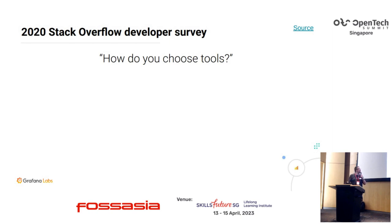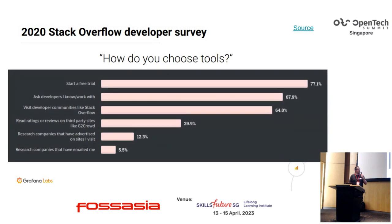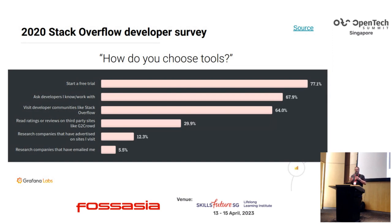There's a really nice Stack Overflow survey — they did one again last year, but the results are basically the same — asking how developers choose software. If you look at the first three: starting a free trial, asking other developers, and visiting developer communities — those are things done really well within open source. Open source enables all three of those. You can try it yourself, talk to others who use it, find people at conferences who are excited about it. Developers are increasingly defining what corporations adopt, so you can actually shape what people use — way before any commercial conversation — by making the open source absolutely stellar.